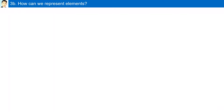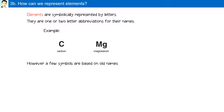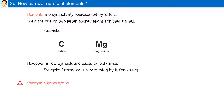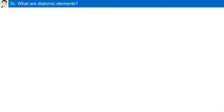How can you represent elements? Elements are symbolically represented by letters — one or two letter abbreviations. For example, C for carbon or Mg for magnesium. However, a few symbols are based on old names; for example, potassium is represented by K for kalium. A common misconception: students often write both the first and second letter in uppercase — for example, chlorine written as uppercase C and uppercase L — when it should be uppercase C and lowercase l.